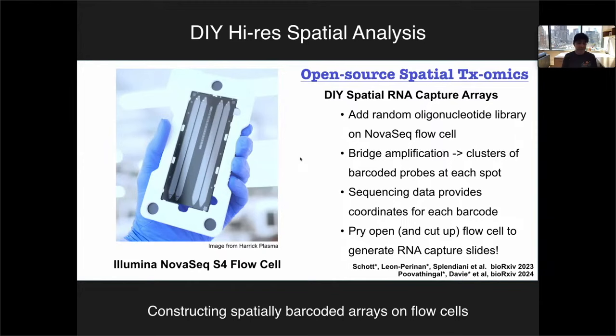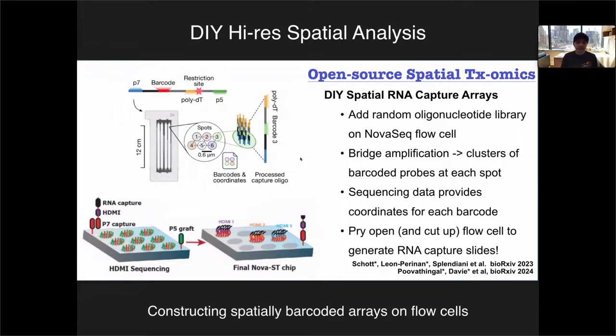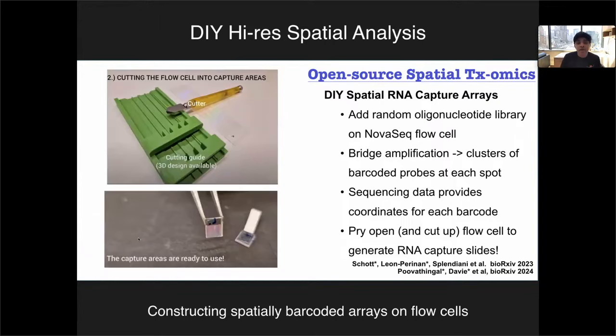Two groups have demonstrated how to do this year — the Royosky and Ertz labs — using the Illumina NovaSeq flow cell, which is about the size of your hand. Basically, you pour a bunch of barcoded oligos randomly all over the flow cell, then run the NovaSeq, which does two things: first, it makes many copies of each oligo in the same spatial location through bridge amplification — exactly what you need to create a spatial capture array. Second, it sequences those oligos, so you know exactly which barcode corresponds to which spatial location. At this point you've essentially made your own massive hand-sized spatially barcoded RNA capture array.